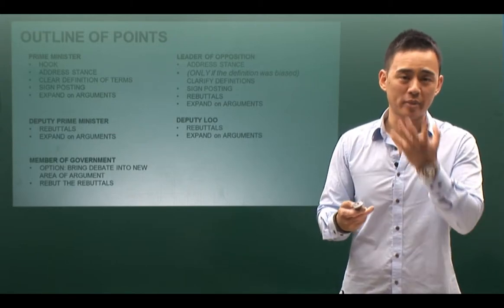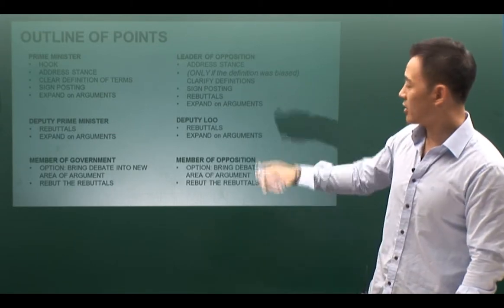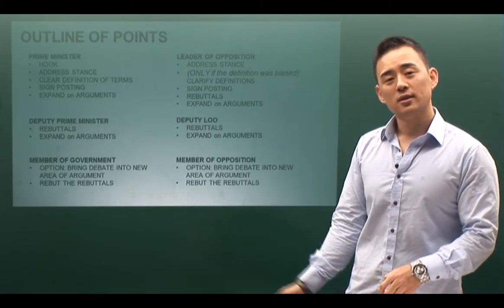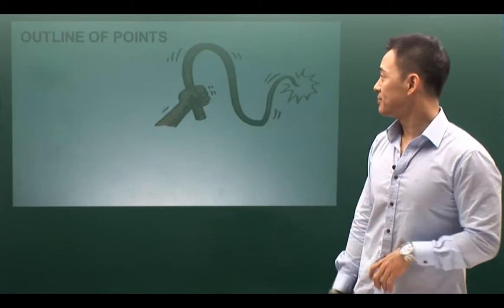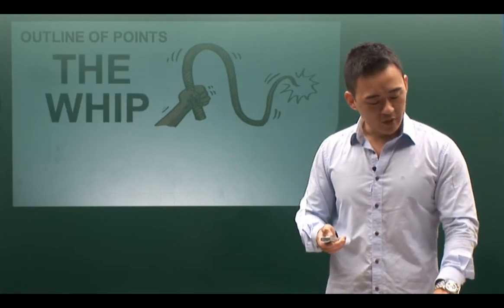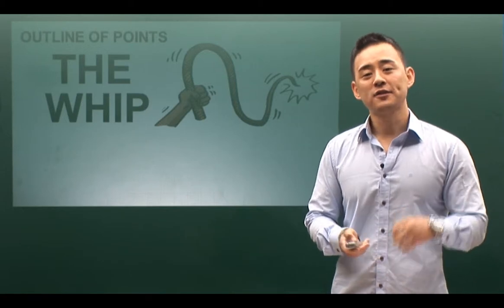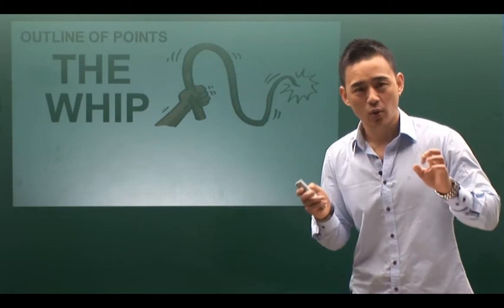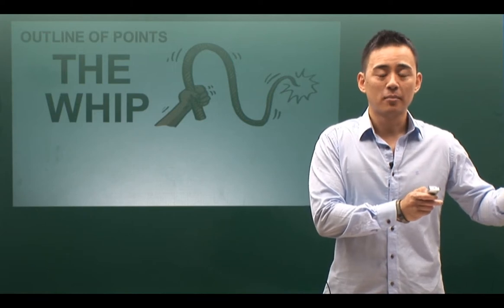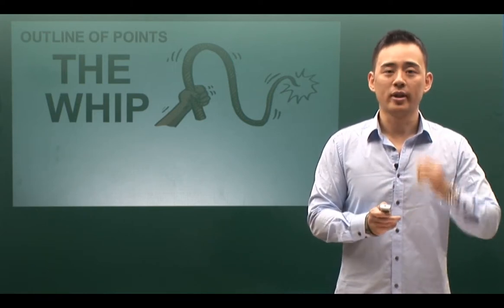The member of the opposition comes in with the same deal. So what's missing? The whips. The whip is going to be the game changer. I've seen a team that did horribly with their first three speakers, but they saved their champion for the whip and won the debate.